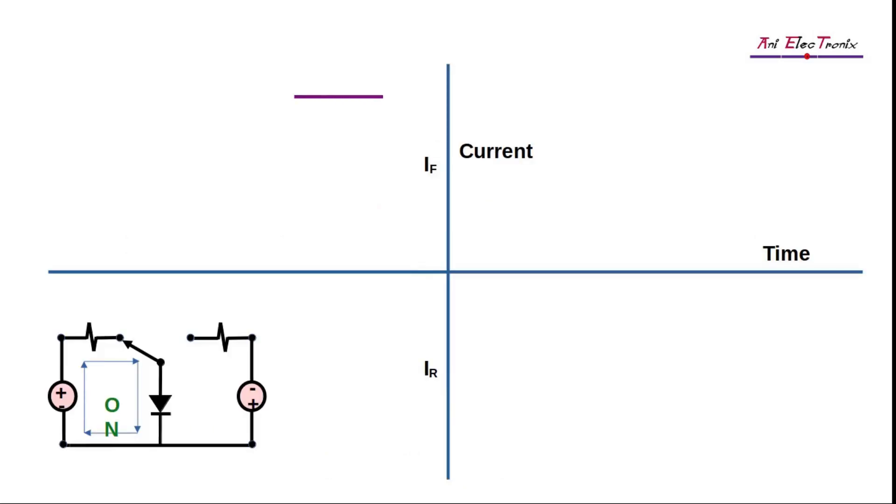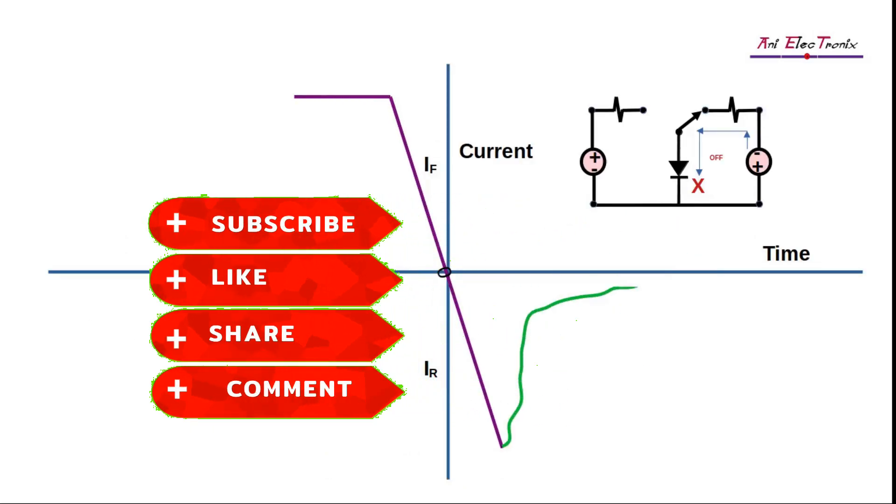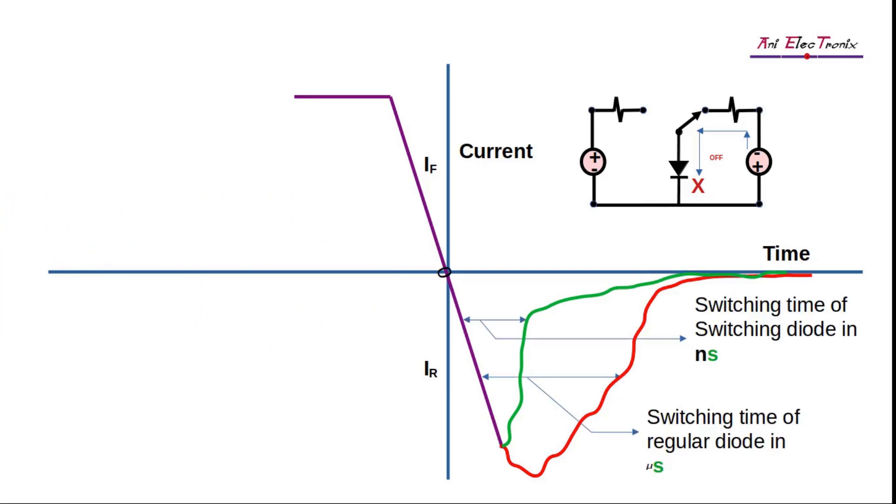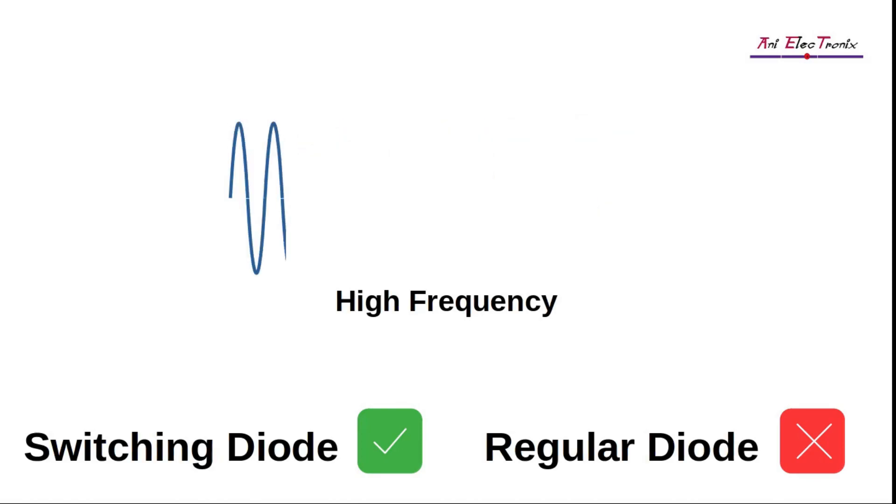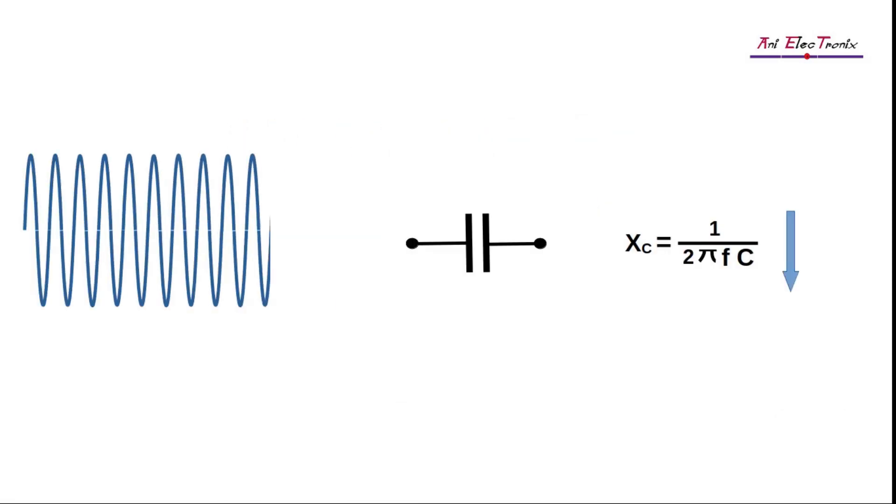In comparison to a regular PN junction diode, a switching diode has a very short switching time and therefore has a very low junction capacitance. A switching diode is used for high-frequency applications where the general PN junction diode fails to work. The reason is as follows.